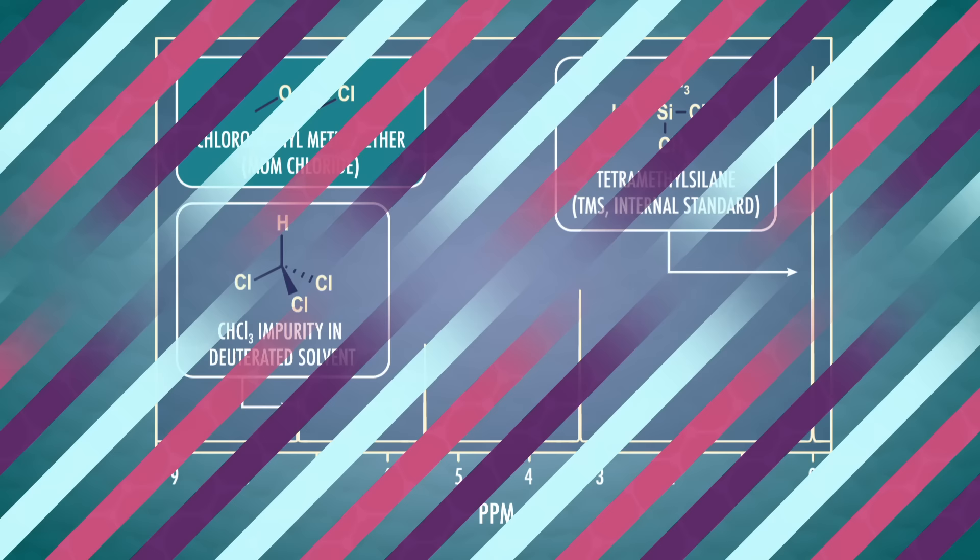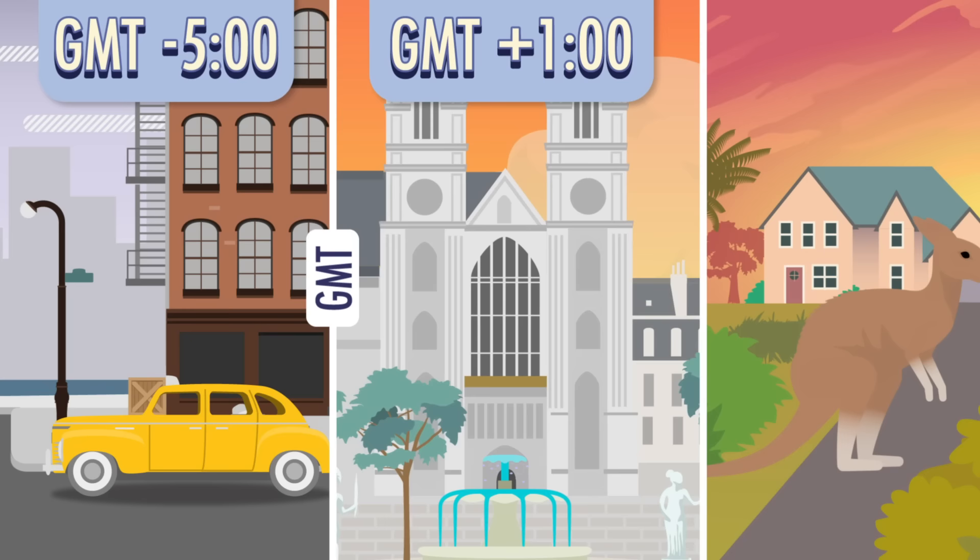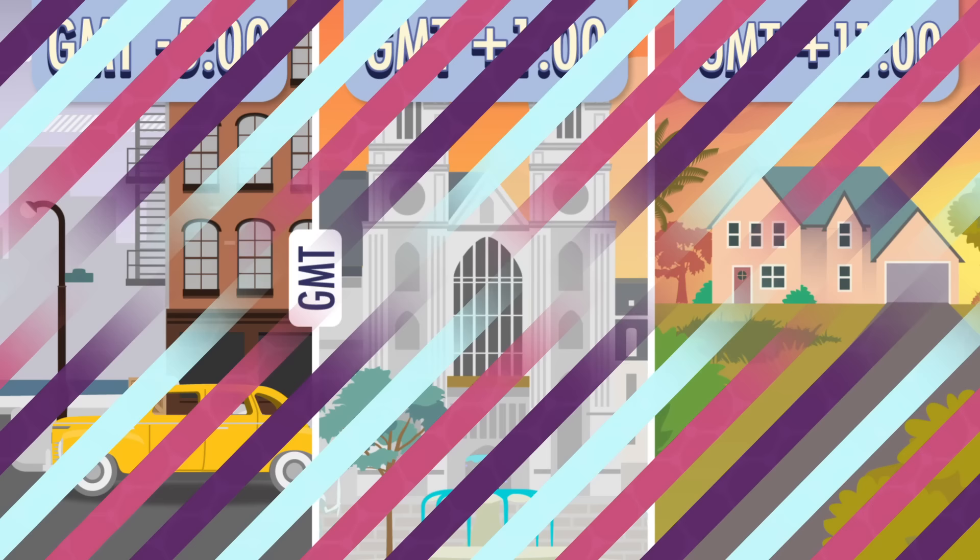If you live in New York, your time zone is GMT-5, while someone in Paris is on GMT+1, and someone in Canberra, Australia is on GMT+11. So, ignoring the peak at zero from our TMS standard, there are only two peaks we need to analyze in the spectrum.